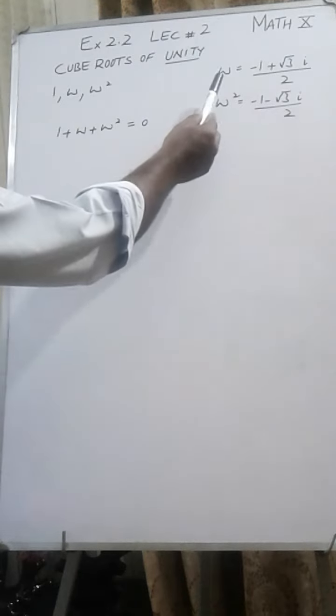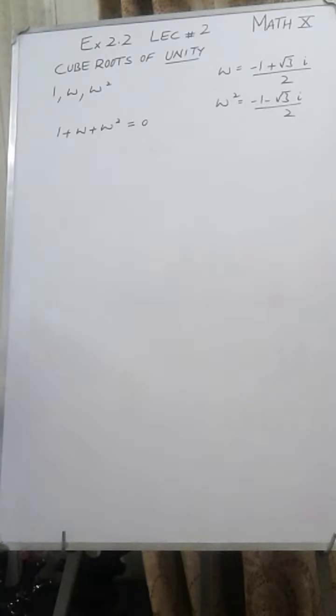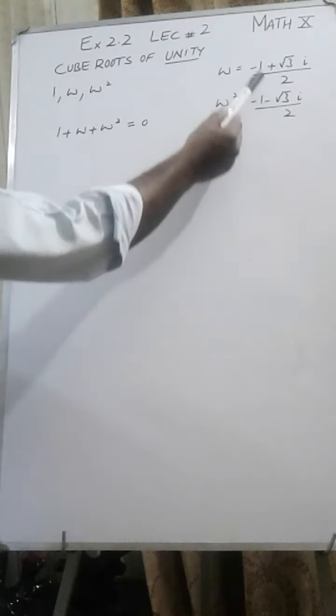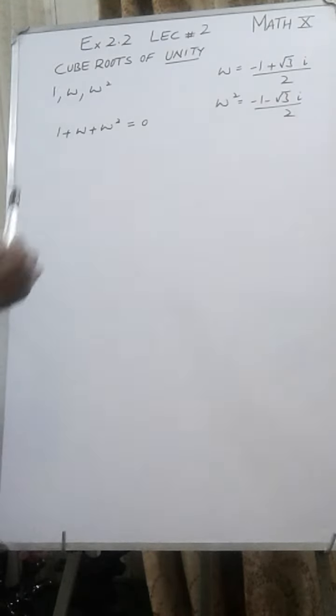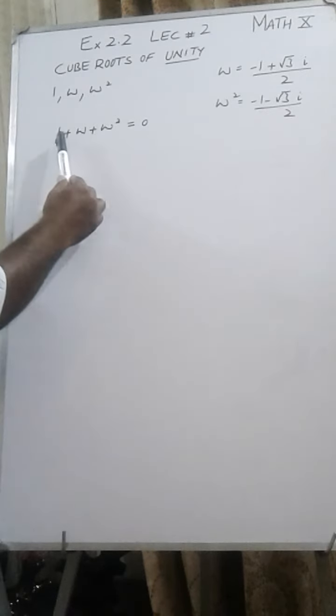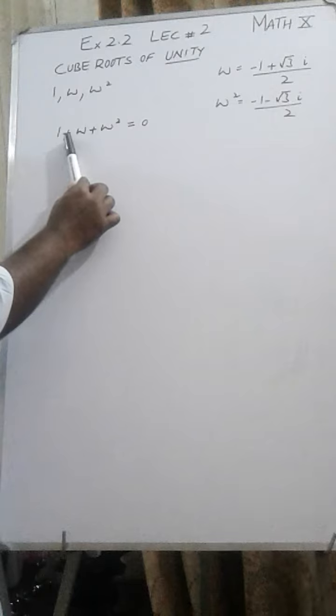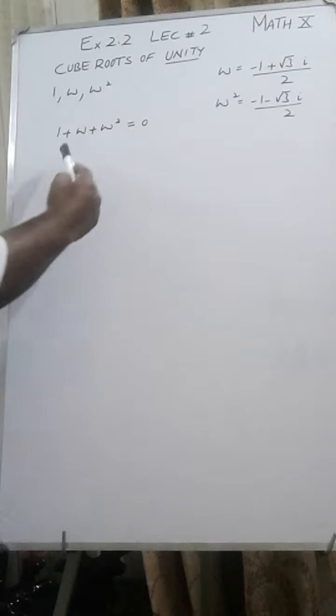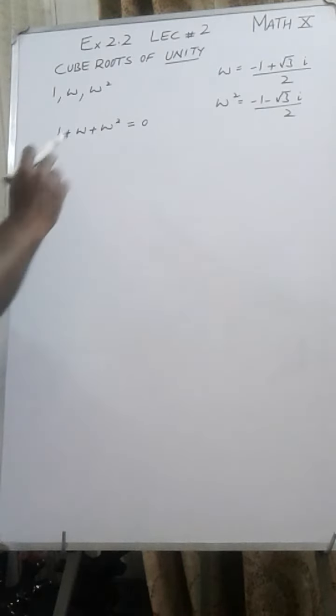Now remember and practice these values of omega and omega square. Even this value can be taken as omega; if this is omega, this will become omega square. Now you yourself try to find out the sum of cube roots of unity: that is 1 + ω + ω². You will get the answer zero. Do the practice yourself.